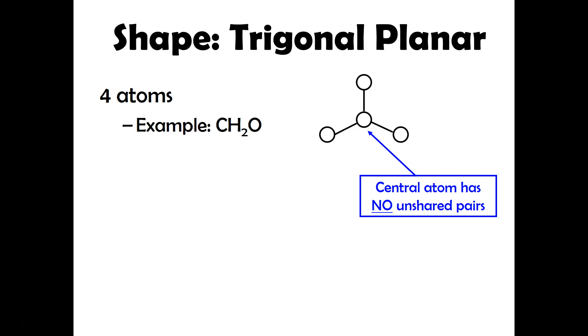So an example would be formaldehyde. So that's the Lewis structure. And then as I mentioned before, since you have three electron domains or three electron regions, that's ultimately going to cause this bond angle to be around 120 degrees.